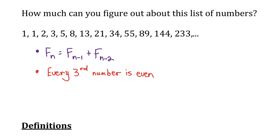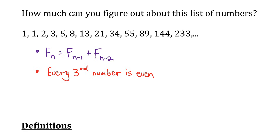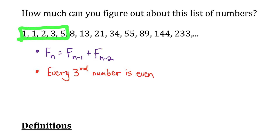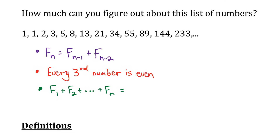Another pattern: if you add the first n Fibonacci numbers — say the first three — one plus one plus two is four, which equals the Fibonacci number two away from it minus one. That pattern holds true. The first four Fibonacci numbers add to seven, which is one less than the sixth Fibonacci number. The first five equal 12, which is one less than the seventh Fibonacci number. So the sum of the first n Fibonacci numbers equals the Fibonacci number two greater than n, minus one.